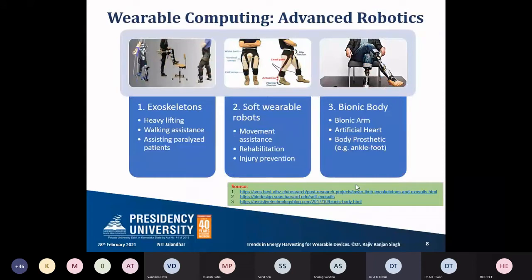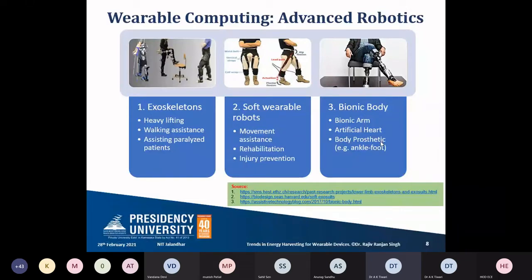In advanced robotics, wearables are predicted to play a big role. Three categories are shown: exoskeletons for heavy lifting and walking assistance for paralyzed individuals; soft wearable robots using stretchable materials for movement assistance, rehabilitation, and injury prevention; and bionic body components such as bionic arms, artificial hearts, and body prosthetics, providing proper muscle control through bionic prosthetics.